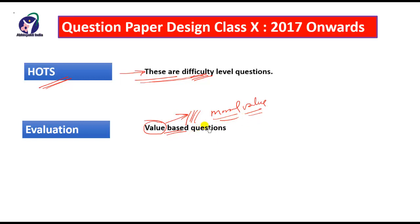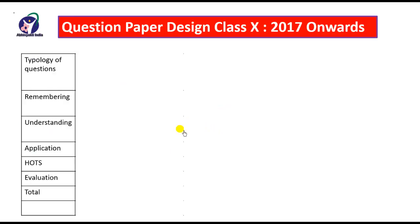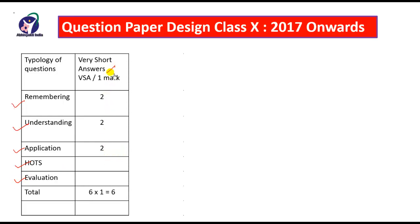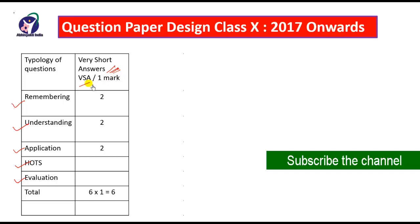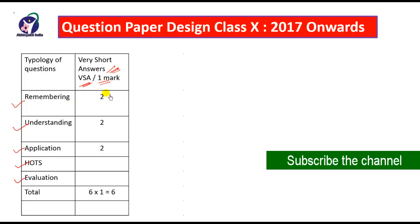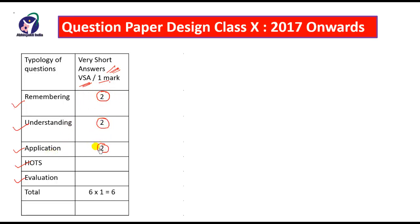Now let us see how marks are distributed across these five parameters. The question typology includes remembering, understanding, application, HOTS, and evaluation types. The first set is Very Short Answer (VSA) questions of one mark each. For the remembering parameter there will be two questions, for understanding two questions, and for application two questions — giving six questions of one mark each, totalling six marks.